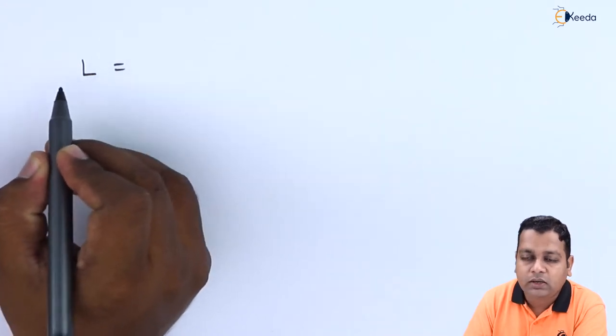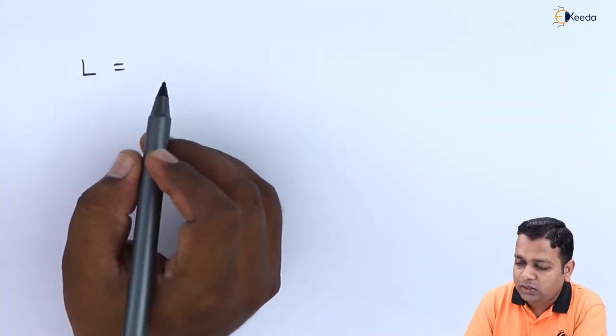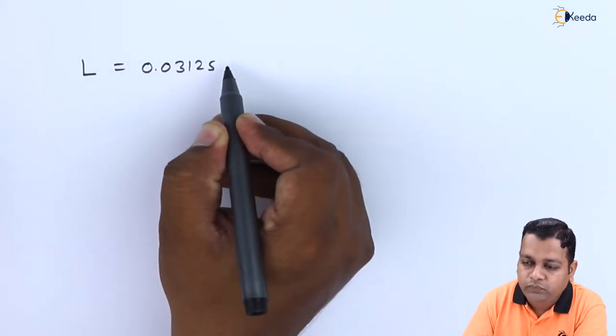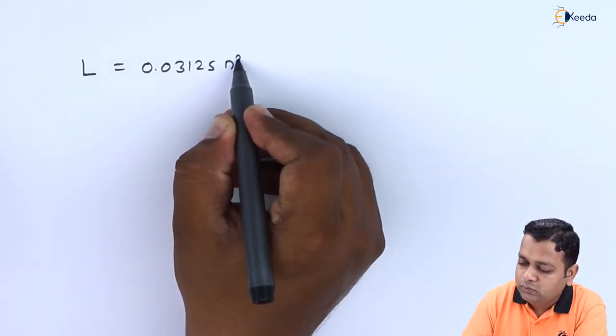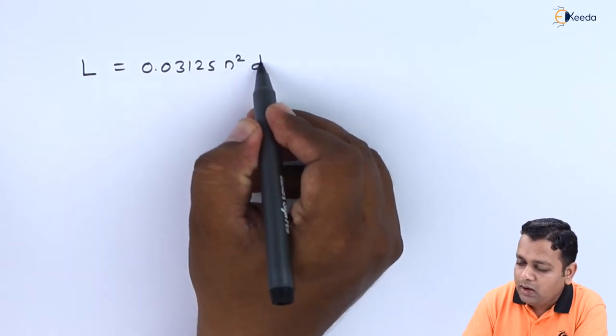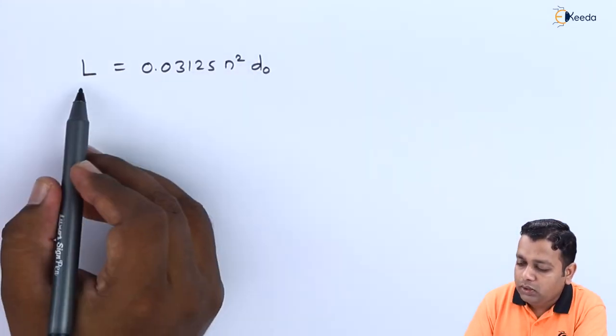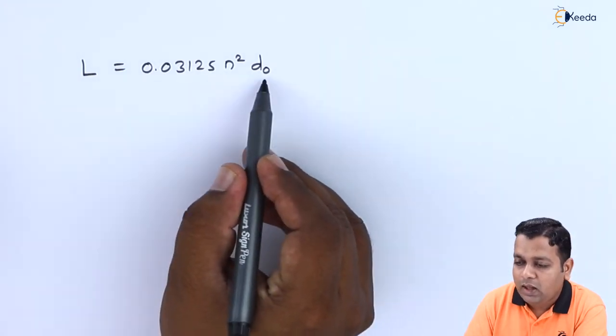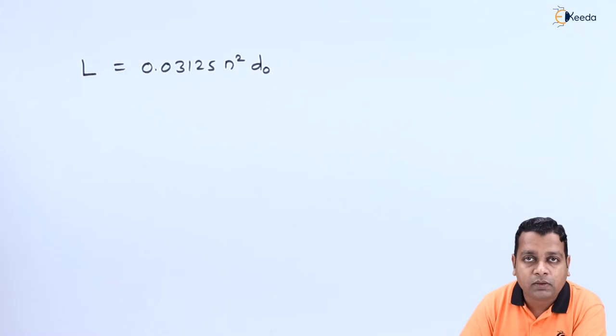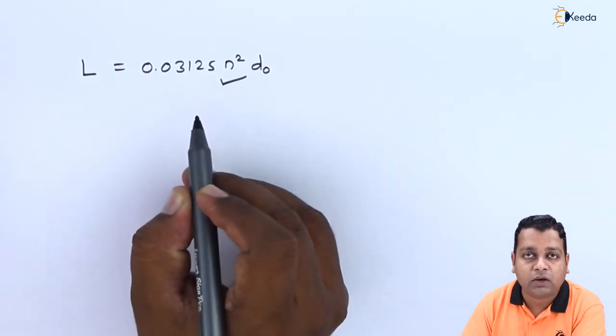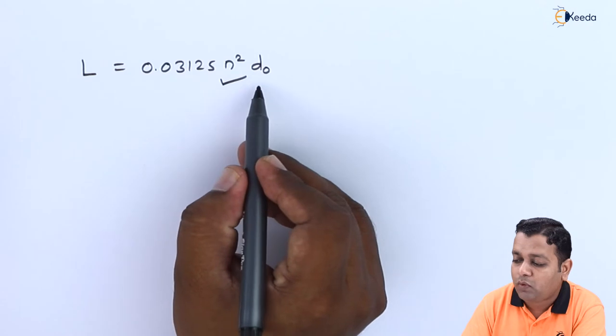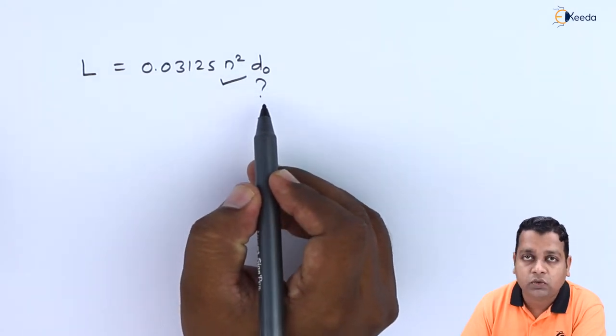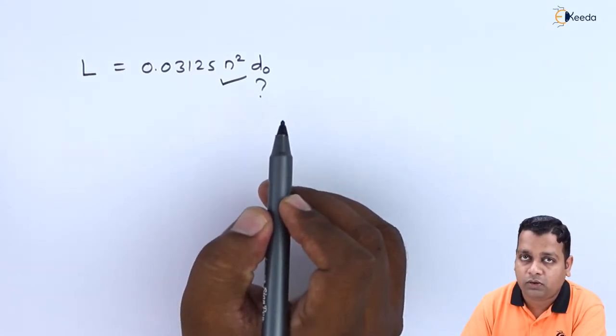For the determination of inductance value we require n and d₀. As per the problem statement, n the number of turns is available to us, but we don't have the value of d₀. So for determination of d₀ we should take the help of another formulation.